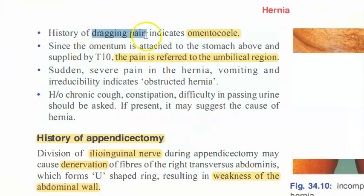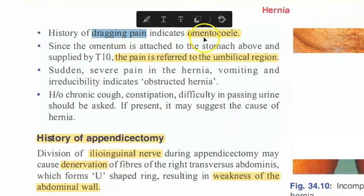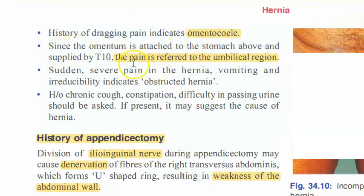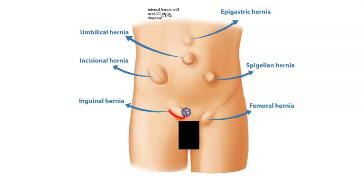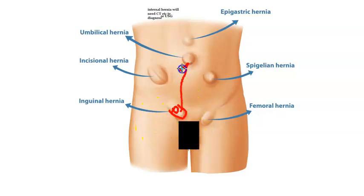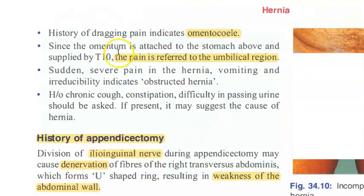These people may tell you about pain. If there is a dragging pain, the content of this hernia could be omentum — that is called omentocele. But if it is bowel then it is called enterocele; they do not have dragging pain. If there is dragging pain it will be omentocele. This pain can be referred to the umbilical region.